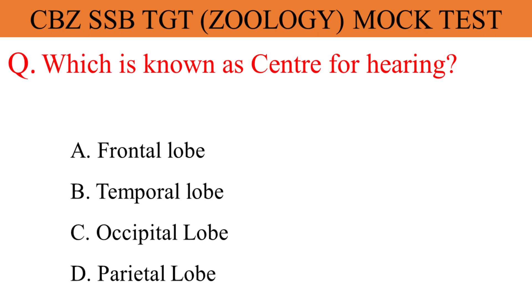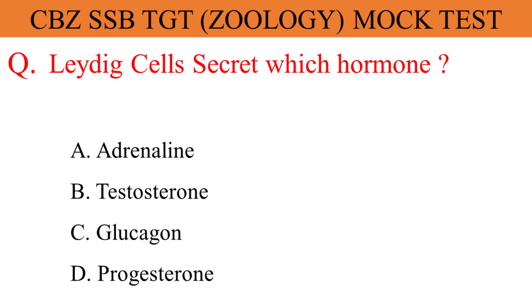Which is known as the center for hearing? The given options are A. Frontal lobe, B. Temporal lobe, C. Occipital lobe, D. Parietal lobe. And the correct answer is option B. Temporal lobe.